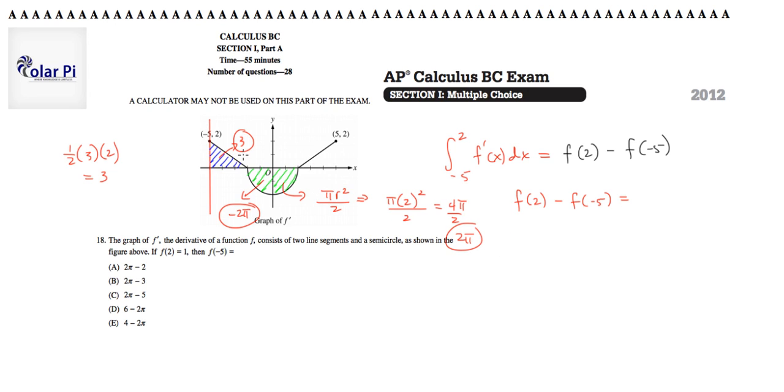So then, together, the blue region and that semicircular region that's green have area that combines for 3 and negative 2 pi, which is to say that f of 2 minus f of negative 5 has to equal 3 minus 2 pi.